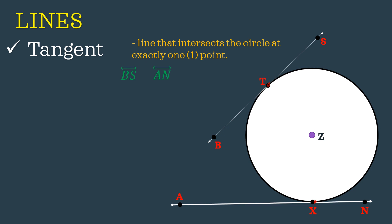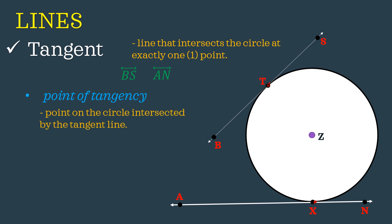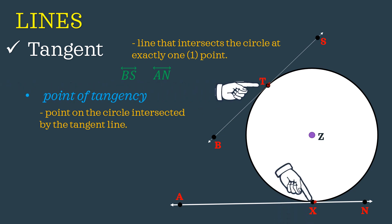We also have a term under tangent called the point of tangency. The point of tangency is a point on the circle intersected by the tangent line. Those points are point T and point X — those are our points of tangency.